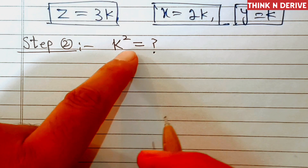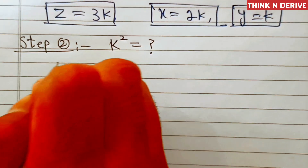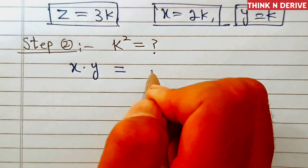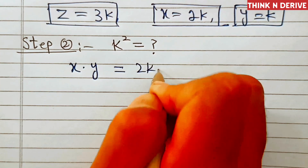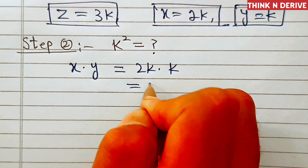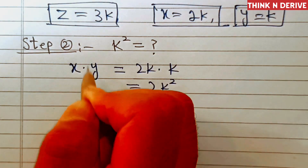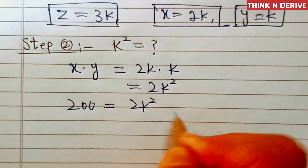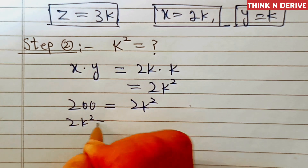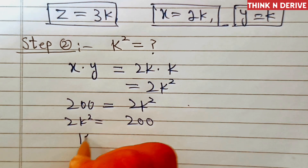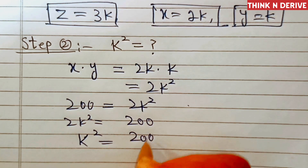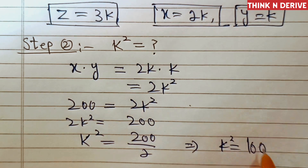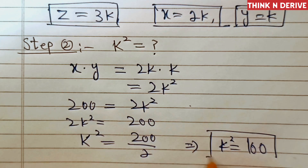Now in step number two, we'll find the value of k square. We write x times y equal to 2k times k, which is equal to 2k square. But we know from the question that x times y is 200. So 200 is equal to 2k square, which means k square is equal to 100.